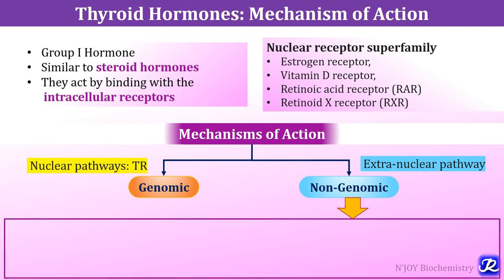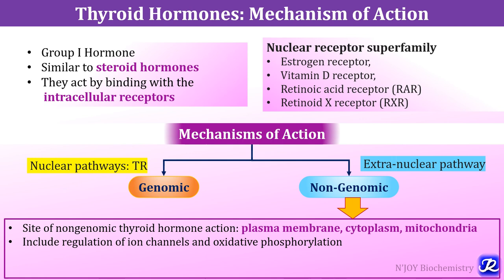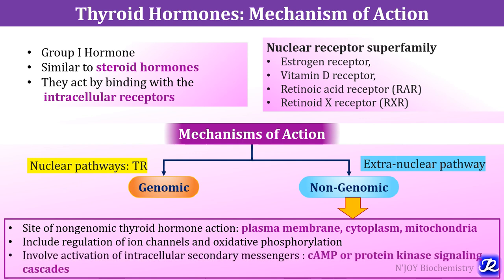The site of non-genomic thyroid hormone action is through plasma membranes, cytoplasm or mitochondria. It includes regulation of ion channels and oxidative phosphorylation, and it involves activation of intracellular secondary messengers like cyclic AMP or protein kinase signaling pathways.